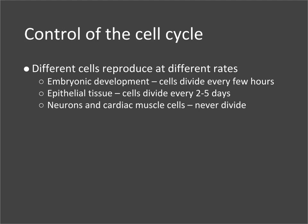Different cells in the body reproduce at different rates. The cell needs to be able to get signals to tell it when it needs to go through mitosis and when it should not.